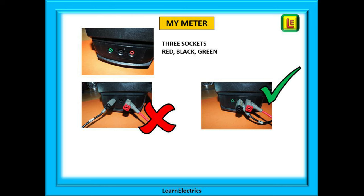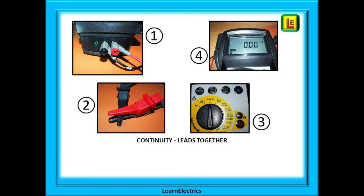My meter has three sockets for the test leads at the top edge, colored red, black, and green. Continuity testing is a dead test so I only need two leads — the red and the black. It does matter that I put them in the correct holes since using the wrong hole will give me the wrong results. My meter uses the red and black sockets; another meter I had used the red and green sockets. Know your meter. The first steps to proving correct meter function are: number one, put the test leads into the correct sockets; number two, link the leads together with the crocodile clips; number three, set your meter to the low ohms continuity range; and number four, press the test button and observe the results.